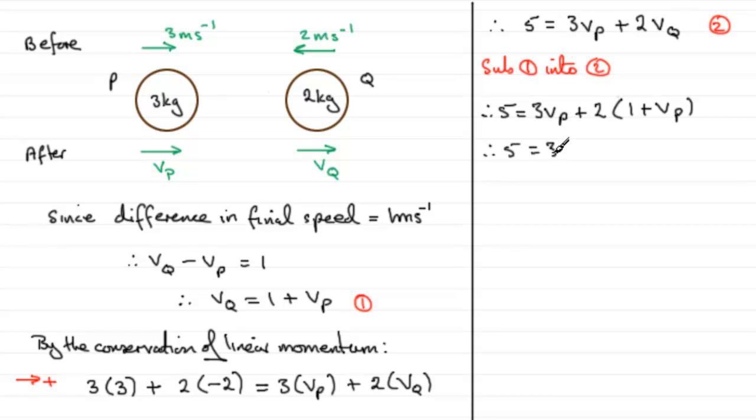If we expand the bracket we've got 5 equals 3VP plus 2 plus 2VP. We could subtract 2 from both sides and we therefore have 5 take 2 which is 3, and then we've got 3VP plus another 2VP which is 5VP. If we divide both sides now by 5, we've got VP equals 3/5 meters per second.